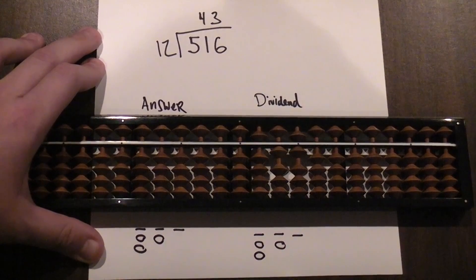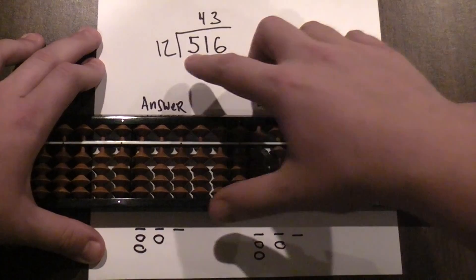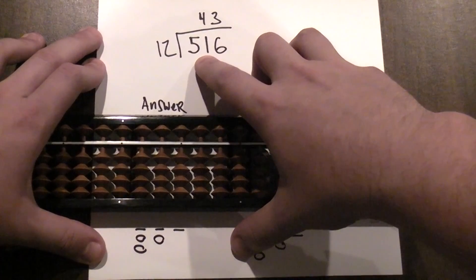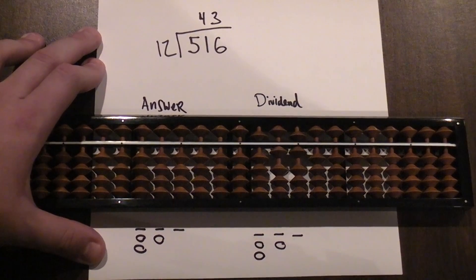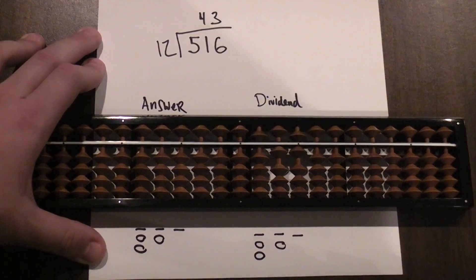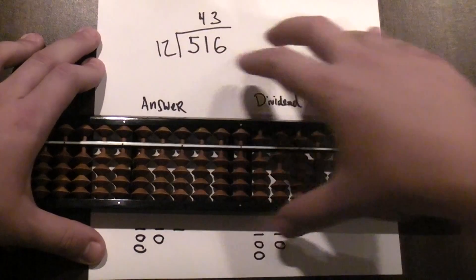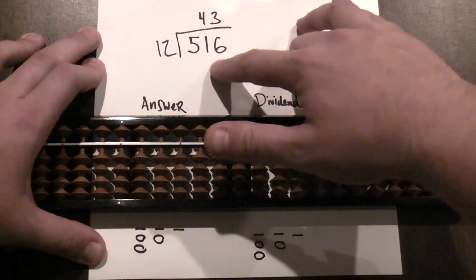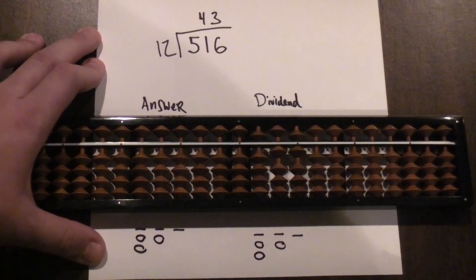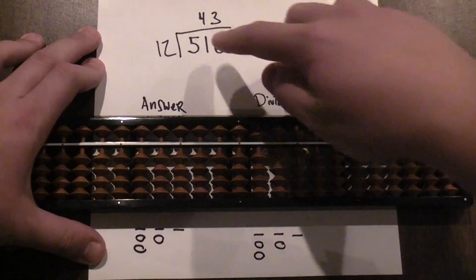And then the one real key to Soroban division is trying to figure out how many places your answer is going to return - one place, two place, three places. So 516 divided by 12, is that going to give me a one-digit answer? Well, division is the opposite of multiplication, so you can ask yourself: the largest one-digit number is 9. 9 times 12, is that going to be equal to 516 or larger than 516? No, so we know we're not going to get a one-digit answer.